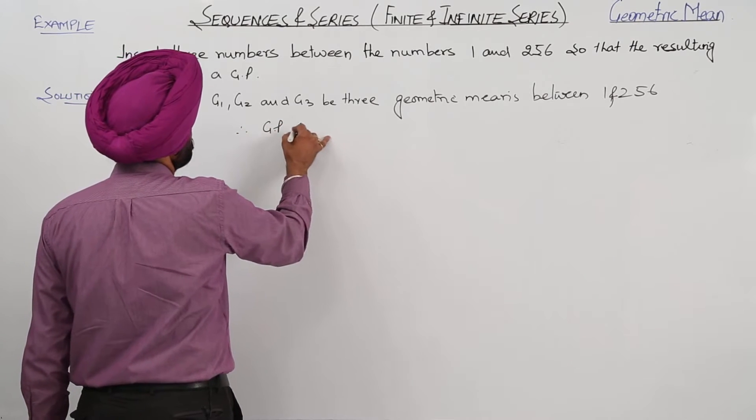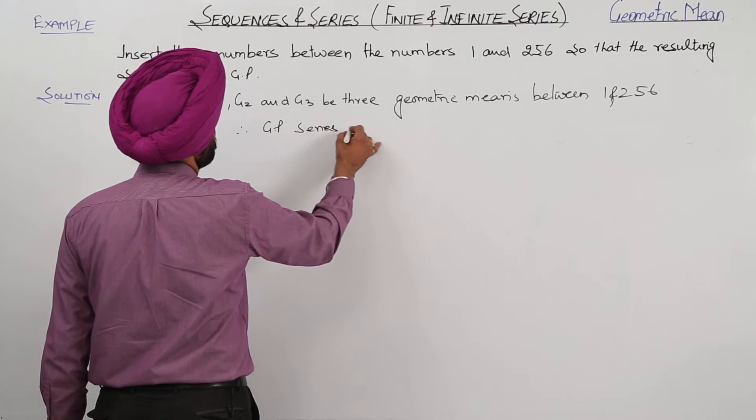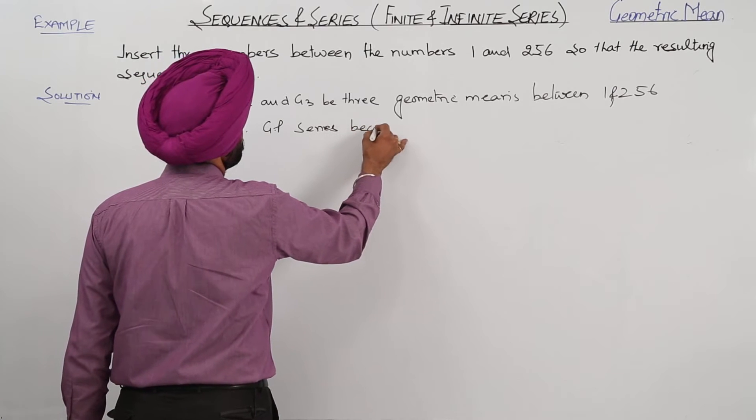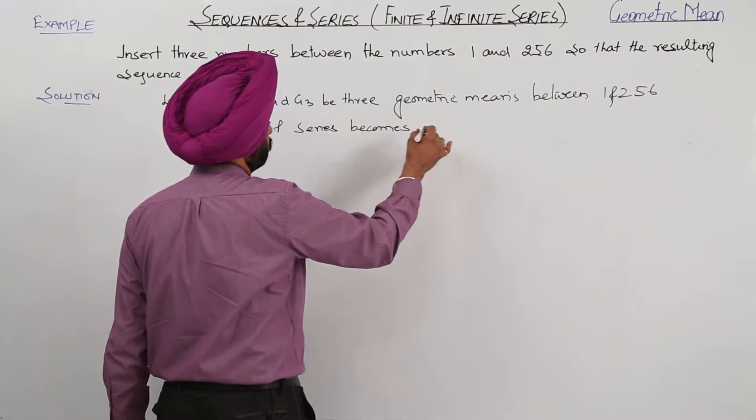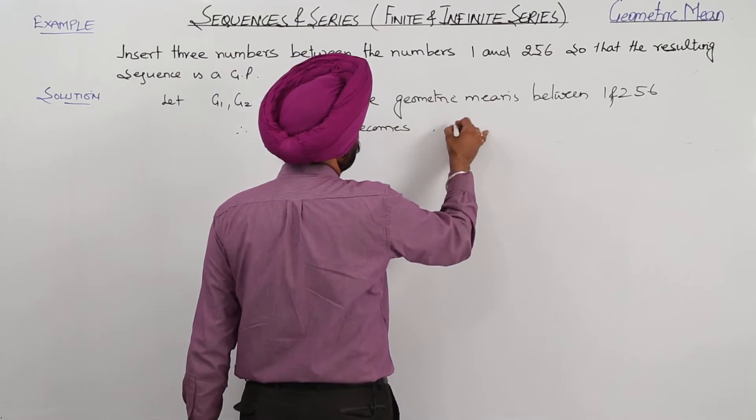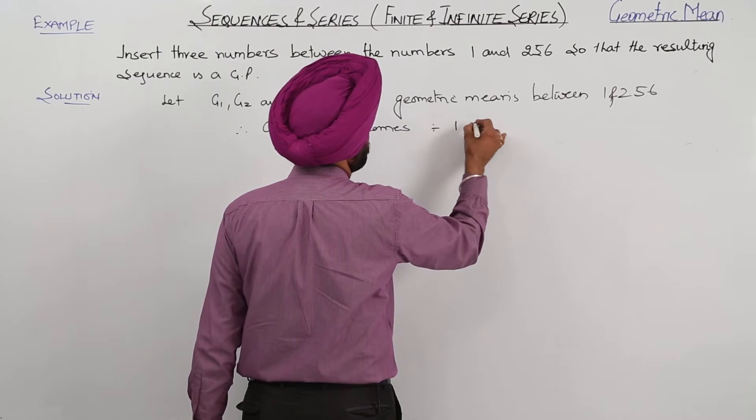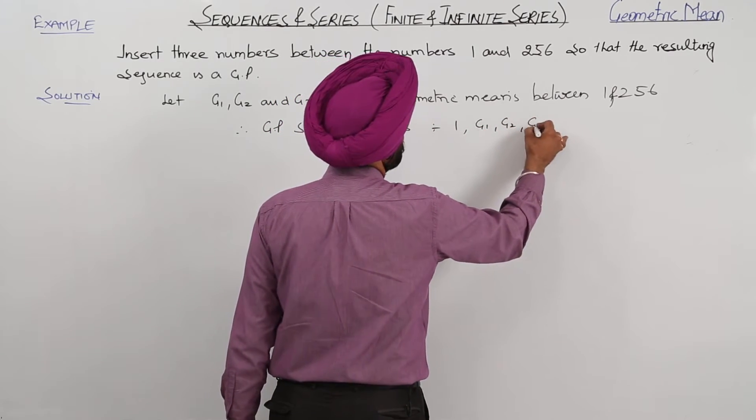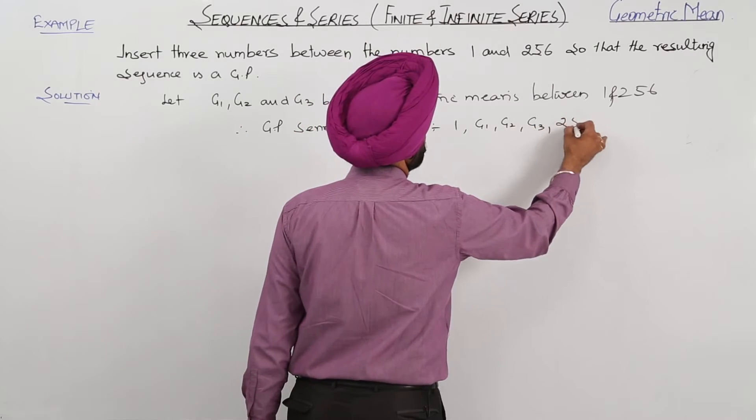Therefore, the GP series becomes 1, then G1, G2, G3, and 256.